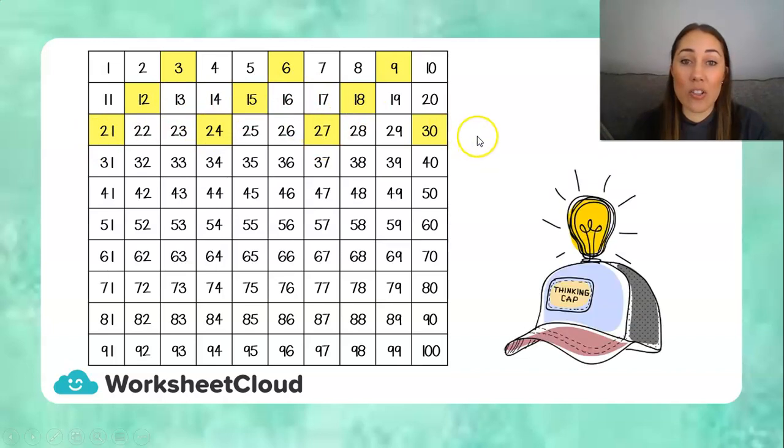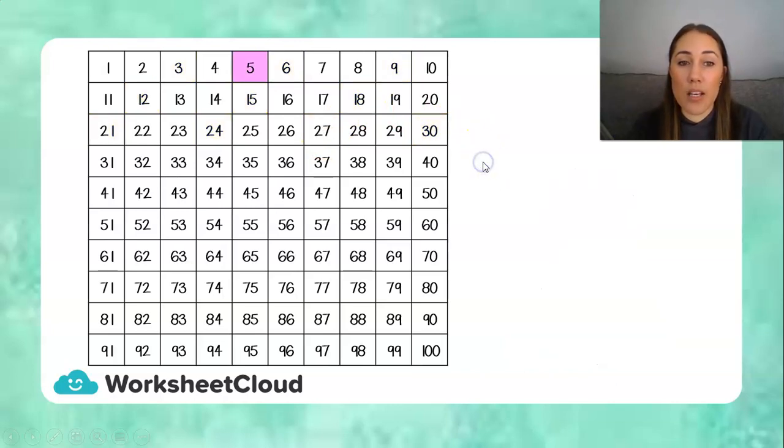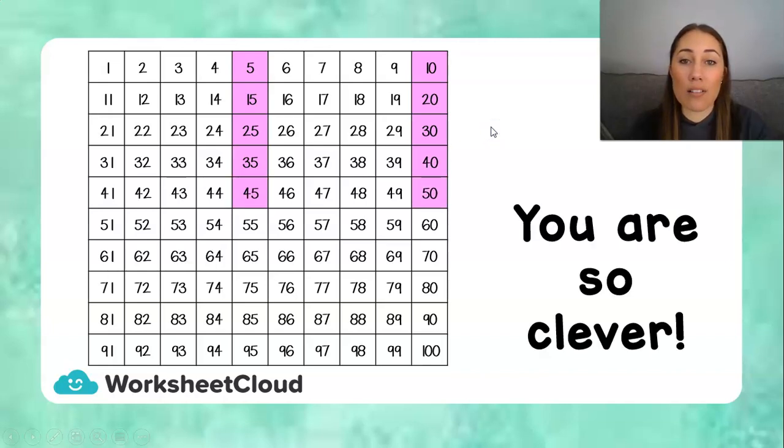Well done, Grade 2s. You definitely put your thinking caps on this morning before you started watching. Now let's count in 5s. So we start at 5, and then 10, and then our pattern repeats itself immediately. 15, 20, 25, 30, 35, 40, 45, 50. Well done, Grade 2s. You are so clever.